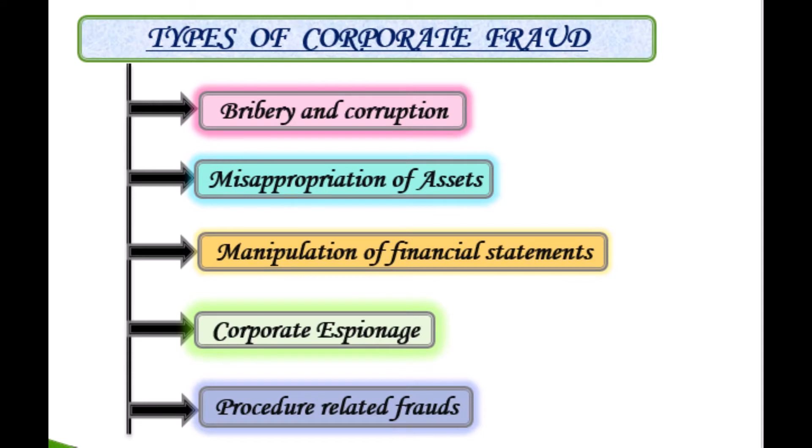Researchers have concluded that there are five types of frauds. The first one is bribery or corruption. The second one is misappropriation of assets. The third one is manipulation of financial statements. The fourth one is procedural lapses. And the fifth is corporate espionage.